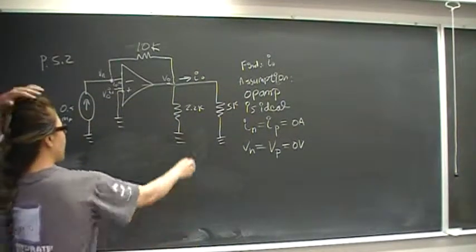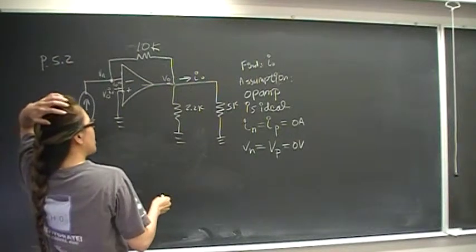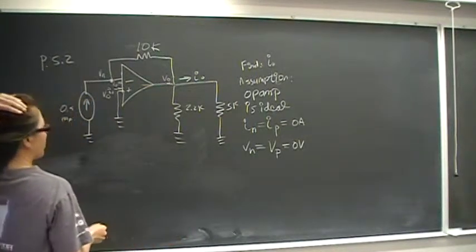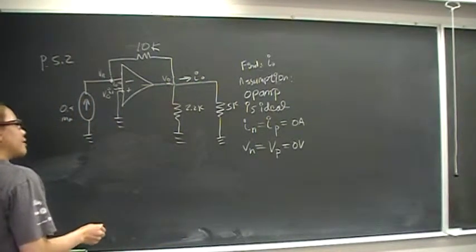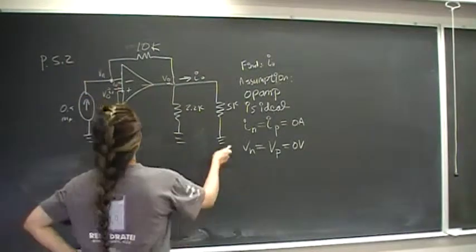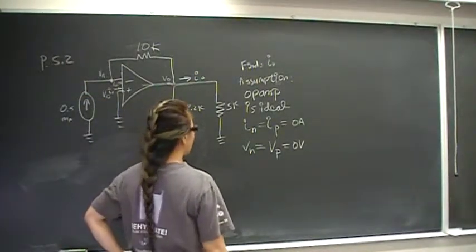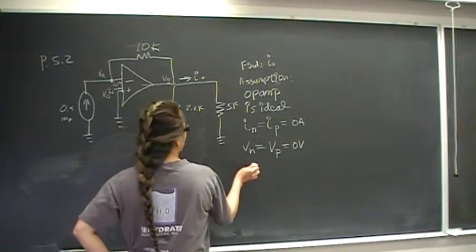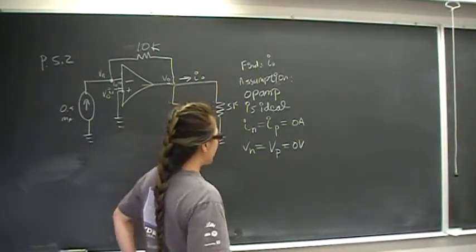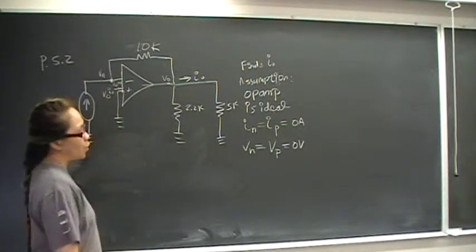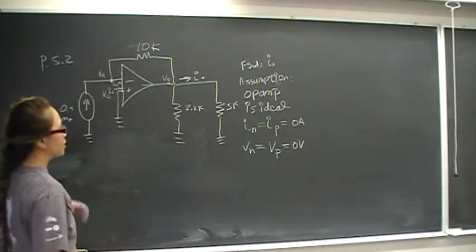So we want to find I out. Since we know that this is, well, we're given that this is an ideal op amp, that tells us that the current into the negative and the positive terminals will be zero. And the voltage of the negative and the positive terminal will be zero, because VP is grounded.